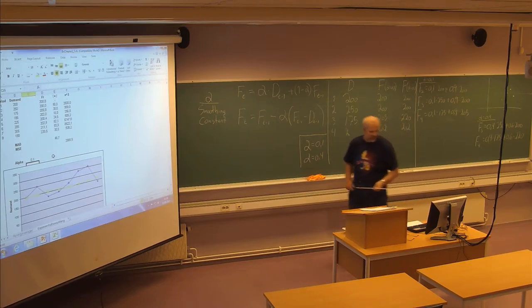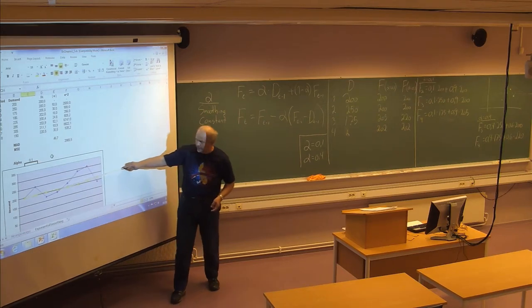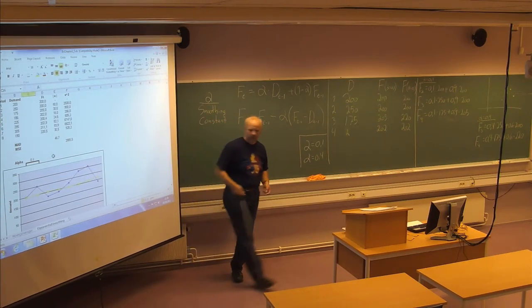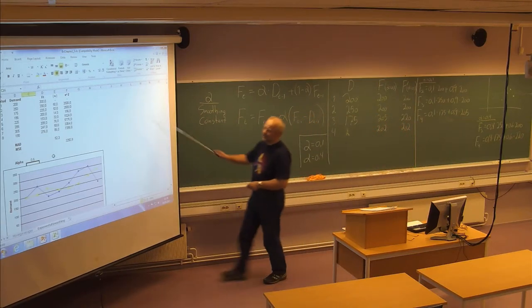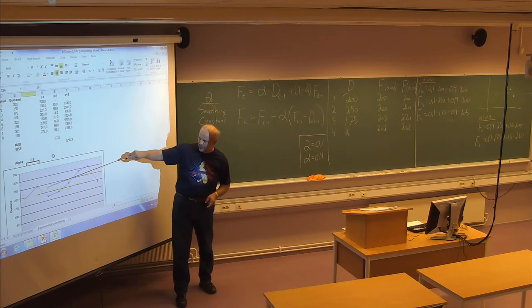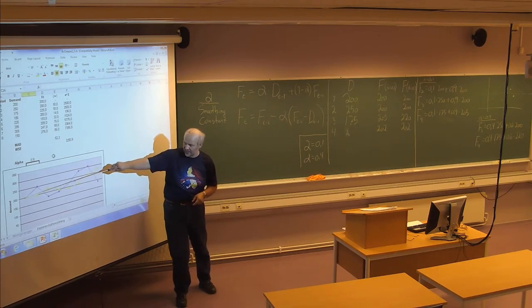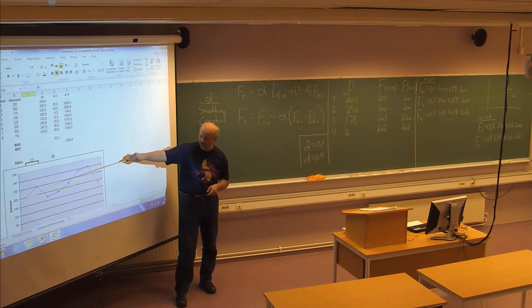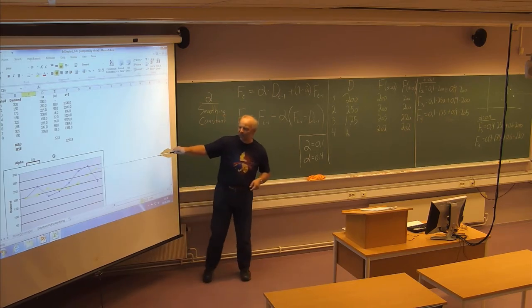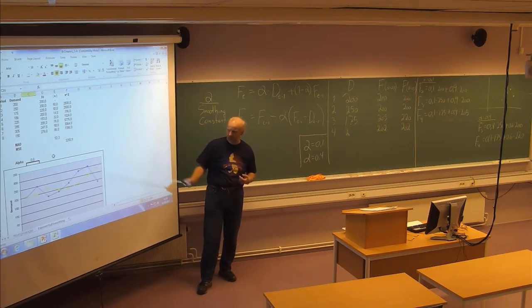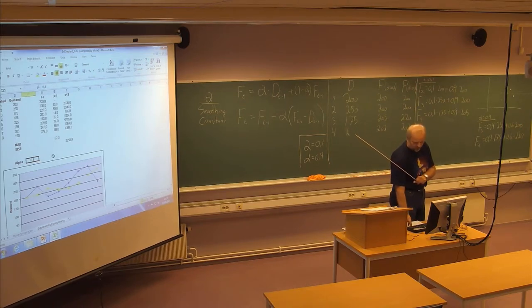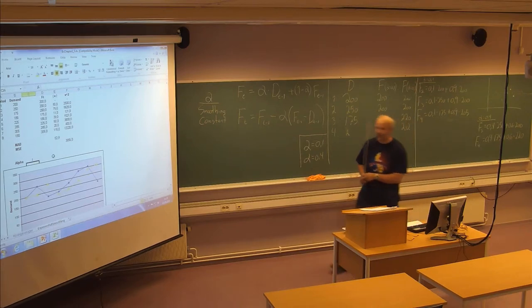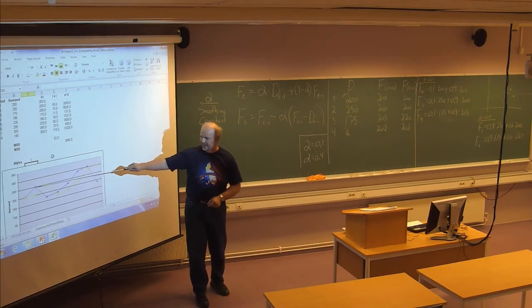Using alpha = 0.1 gives a rather stable forecast — the yellow line does not change much from one period to the next. Using a larger value, like 0.5, the forecast follows the actual previous demand to a much higher degree. You see an increase from one period to the next, then the yellow line follows the blue line one period later to a much higher degree with large alpha compared to small alpha. If alpha = 1, the forecast is exactly the same as the previous period's demand.